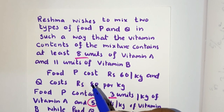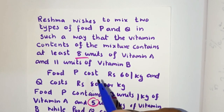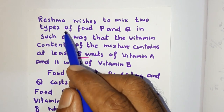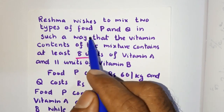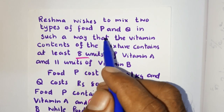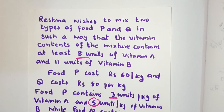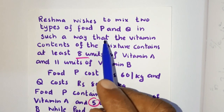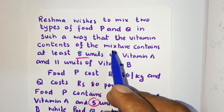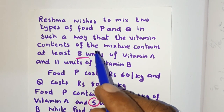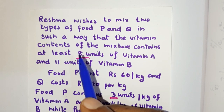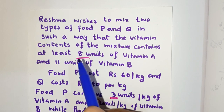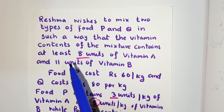Linear programming: problem one. Reshma wishes to mix two types of food, P and Q, in such a way that the vitamin contents of the mixture contain at least 8 units of Vitamin A and 11 units of Vitamin B.